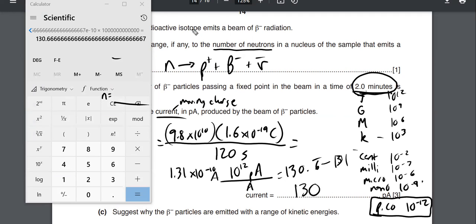And that beam of beta minus particles. So you got this nucleus that's just undergoing this decay. So that every two minutes, it's getting 9.8 by 10 to the 10, you know, beta minus particle. So it's a really tiny current, right? It's only, you know, pico amps.